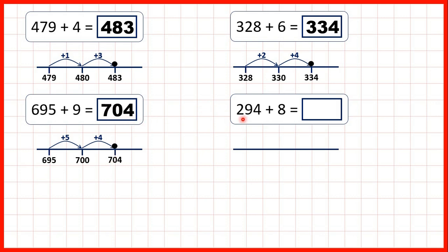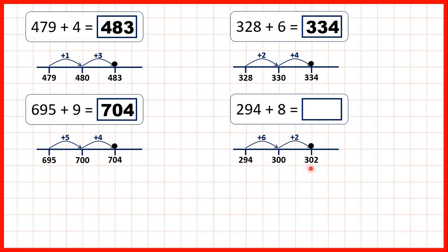And finally, we have 294 plus eight. We can start with 294, and we know that six more will take us to 300, because four and six make a number bond to ten, but as we already have nine tens, our hundreds digit moves up. So we've added six, and need to add eight, so we just need to add two more — so our answer is 302.